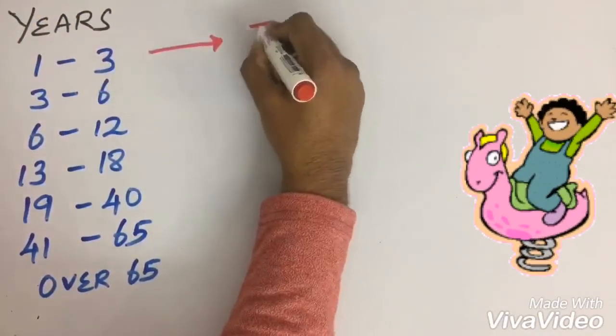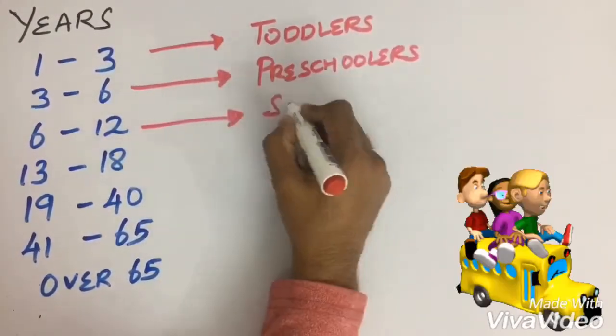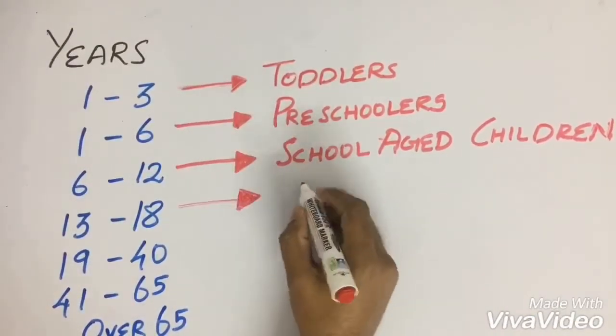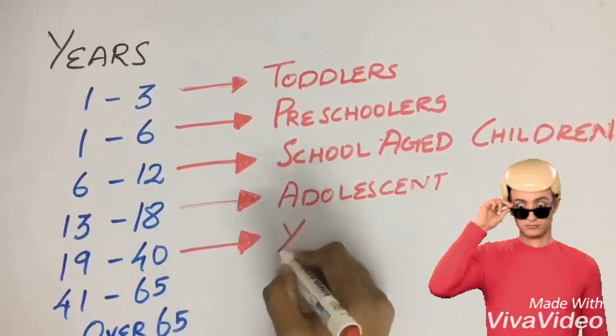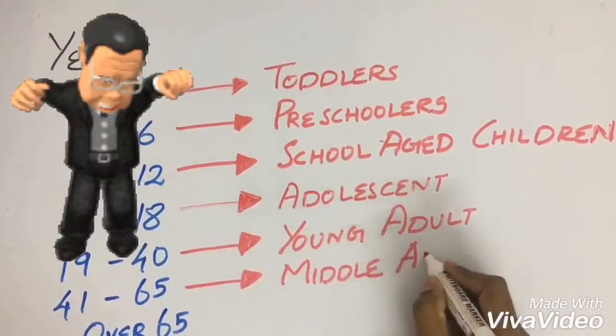From one to three years we call them toddlers, three to six years we call them preschoolers, six to twelve school aged children, and thirteen to eighteen we call them adolescent. Nineteen to forty young adults, forty-one to sixty-five middle aged adult, over sixty-five older adult.